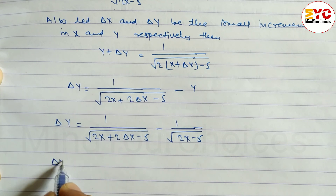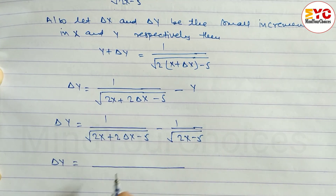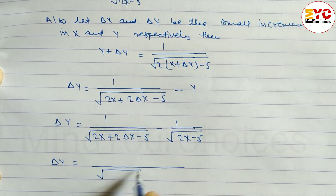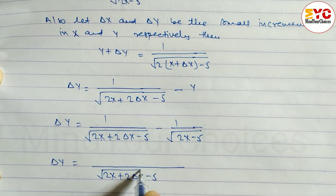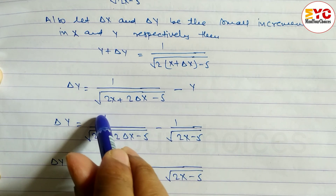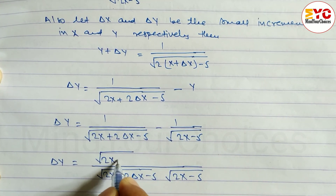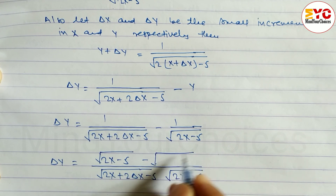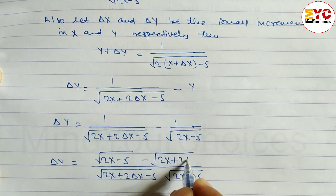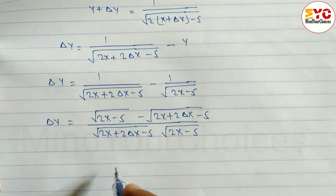Now we have to take the LCM. So del y equals, taking LCM, we can write: root under (2x + 2 del x - 5) times root under (2x - 5) in the denominator. And in the numerator: root under (2x - 5) minus root under (2x + 2 del x - 5).